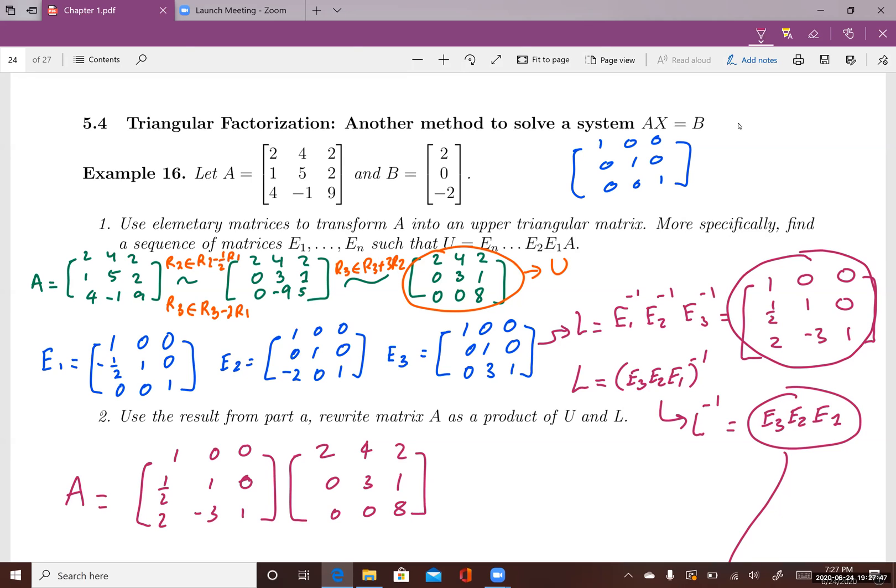Just keep in mind that if I want to combine these three matrices together, it's going to be E3 times E2 times E1, and the inverse of these three matrices.